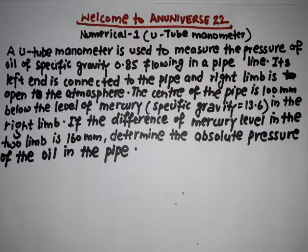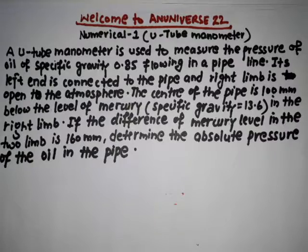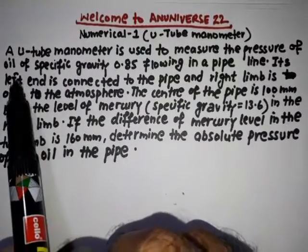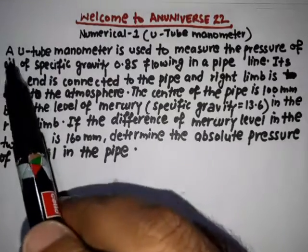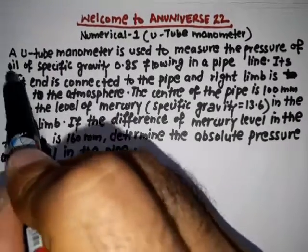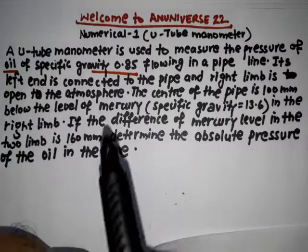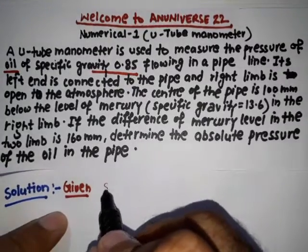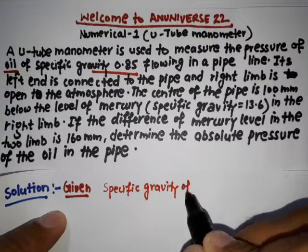Hello friends, welcome to N Universe Double 2. In this video we will solve a numerical based on a U-tube manometer. The problem statement is: a U-tube manometer is used to measure the pressure of oil of specific gravity 0.85 flowing in a pipe. From the statement it is clear that oil is flowing in the pipe, and the specific gravity of oil is 0.85 — this is the light liquid.